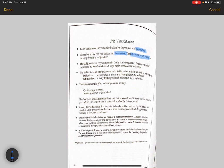The indicative and subjunctive moods divide verbal activity into two broad categories. So these categories are really important. The indicative shows activity that is actual and takes place in the real world. Whereas the subjunctive activity is activity that is potential or imagined. Potential or imagined. So think actual or real versus potential.